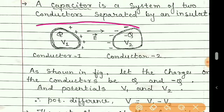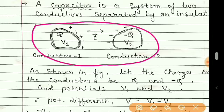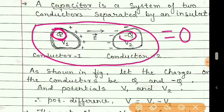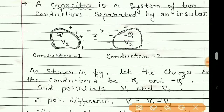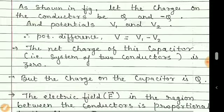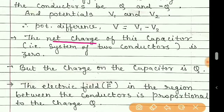The system of two conductors forms a capacitor. If I ask what is the charge of this capacitor, the charge of the capacitor is Q. But the net charge of the capacitor is +Q and −Q, which equals zero. So the net charge of the capacitor is always zero, while the charge of the capacitor is always considered that of the positive conductor — the magnitude, without the negative sign.